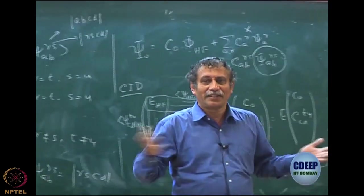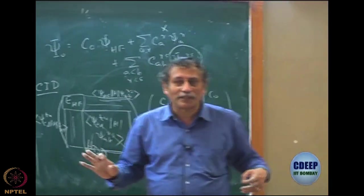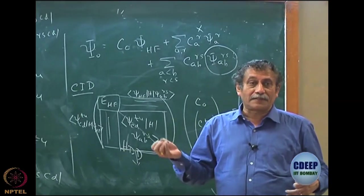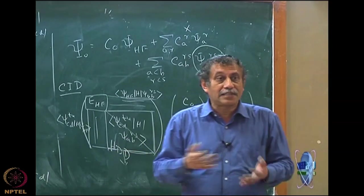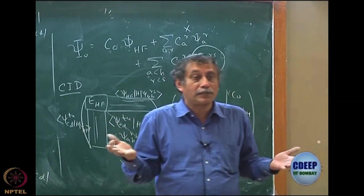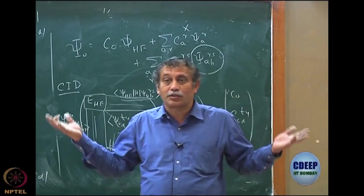After we do CISD, the rest is really a technology—triples, quadruples, I am not going to bother. What we are going to do after that is to look at the deficiencies of approximate CI. Full CI is of course no problem, but we can never do full CI. As I told you, the number of configurations is too large.